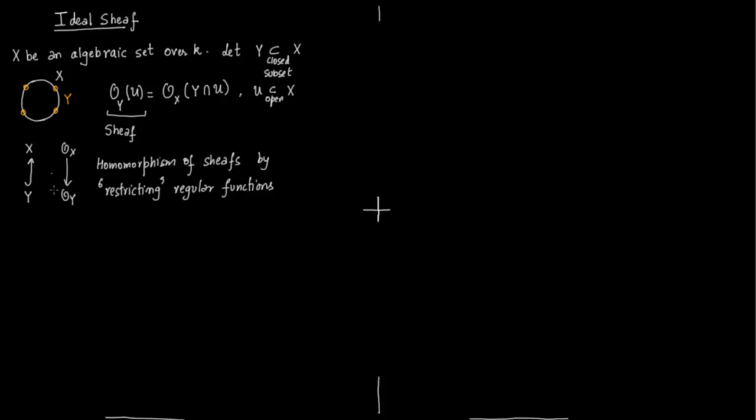The kernel of this sheaf. So we know this is a homomorphism of sheaves. So we have a kernel sheaf also. This kernel sheaf is called the ideal sheaf. And you write it as I_y of x.